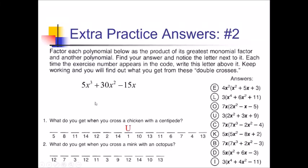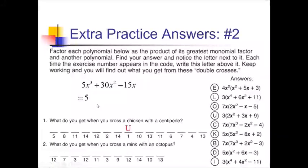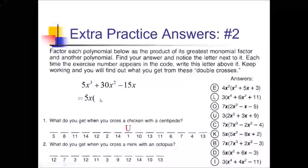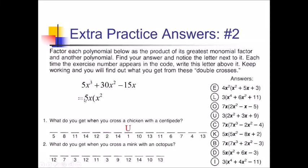For problem 2, looking at the common factors between 5, 30, and 15, I can definitely take a 5 out. They all have at least an x to the first power, so that can come out as well, making my GCF 5x. Dividing each term by 5x: 5x cubed gives x squared; 30x squared gives 6x; and negative 15x gives minus 3. So I've got 5x outside and x squared plus 6x minus 3 inside — that's letter D, going under spot number 2.